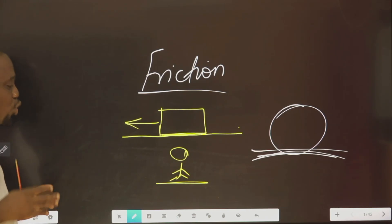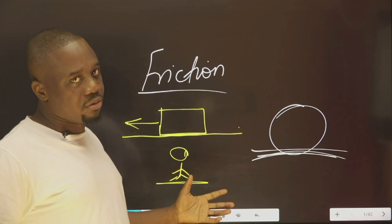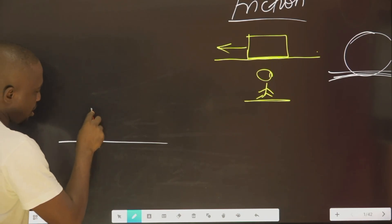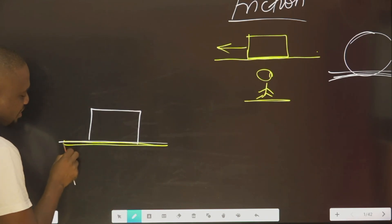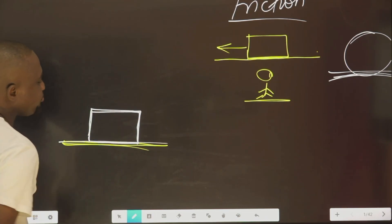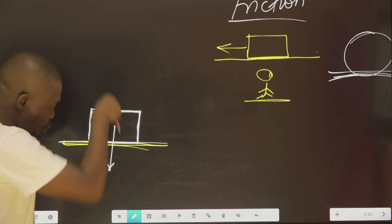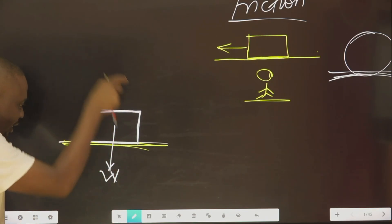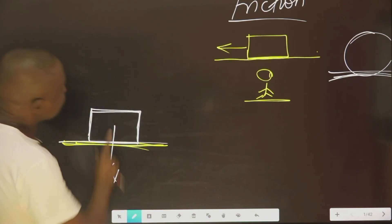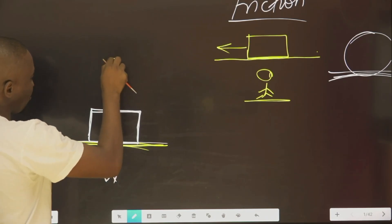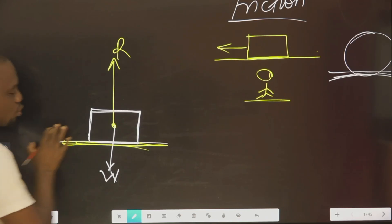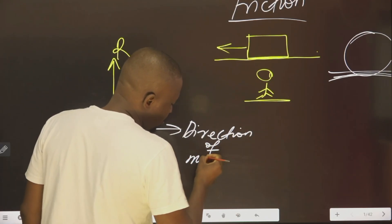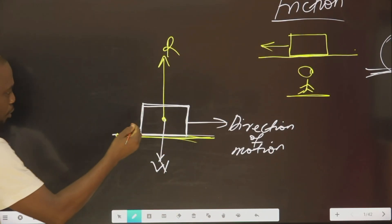Now that you understand friction, the next thing you should understand is the formula of friction — how to calculate friction. Let's draw: say this is a horizontal surface, and this is a block of stone. The block has a weight acting in the downward direction. Whenever there is a force, there is always a reaction. The block exerts weight on the surface, and the surface exerts a force back on the block — we call that the normal reaction. The direction of motion is opposed by friction.